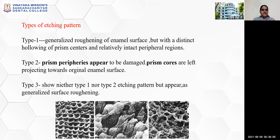The types of etching pattern include three types: Type 1 shows generalized roughening of the enamel surface with dissolution of prism centers and relatively intact peripheral regions. Type 2 shows damaged prism peripheries with prism cores projecting towards the original enamel surface. Type 3 shows neither type 1 nor type 2 pattern but appears as generalized surface roughening.